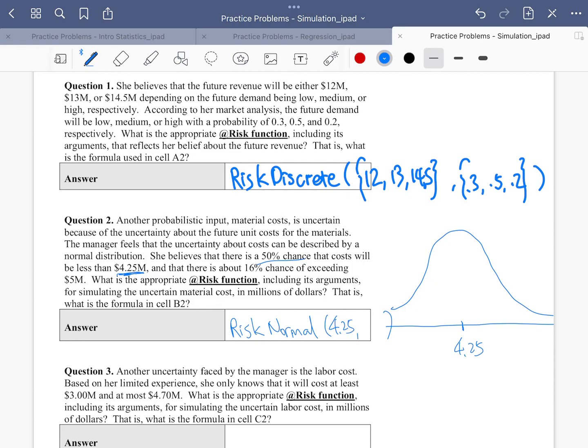And we're left with the standard deviation. How do we figure out a standard deviation? Well, there's another piece of information. She thinks 16% chance is going to exceed 5 million. So let's mark down five first. So five is here. And we know is 16%, right? So this small corner is 16%.